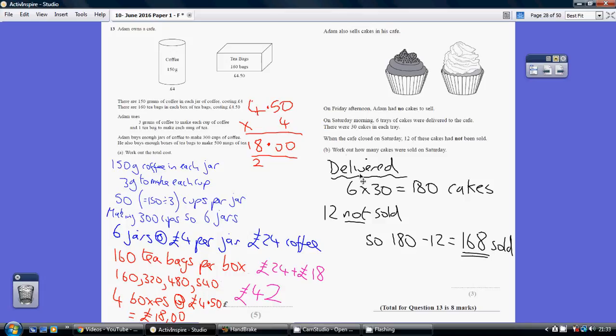Now, part B is a bit more straightforward, I think. There are 6 trays of cakes, 30 cakes in a tray, so that's 180 cakes. 12 are not sold, so how many were sold?